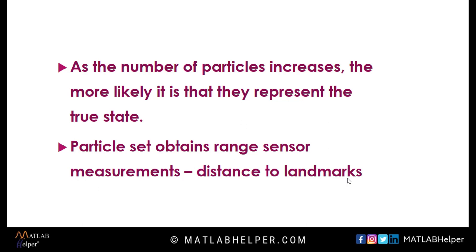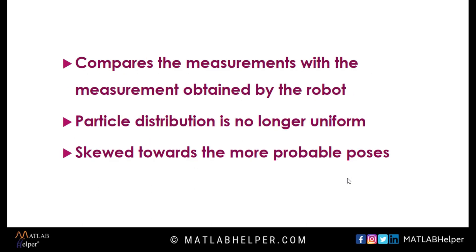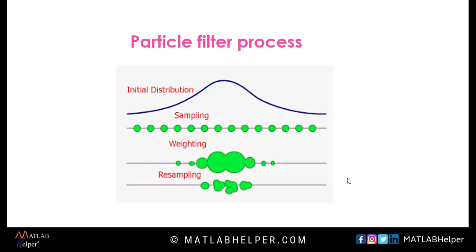Once it gets the lidar range measurements and the patterns that they represent, the particle filter takes each of these particles and determines using the map what the lidar sensor would have returned if that pose was the true pose. These patterns are then compared to determine whether the particle represents the true state of the robot. So the probability distribution after one measurement is no longer uniform but skewed towards the more probable poses. Thus, a set of weighted samples are used with importance weights indicating the probability of each sample being the true pose, where higher weights indicate higher probabilities of the particle being the true state.